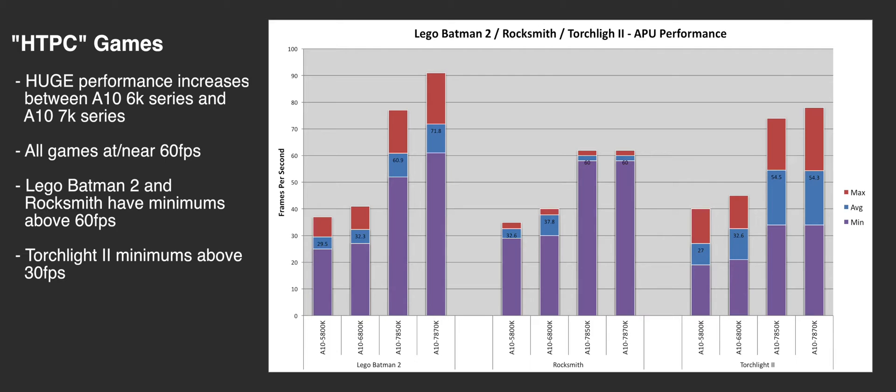The first set is Lego Batman 2, Rocksmith, and Torchlight 2. You can see we're multi-generational here going back to the 5800K. There are some big solid increases between the 6800K and the 7000 series. Pretty much everything is at or above 60 frames per second, and with the 7870K on Lego Batman 2 and Rocksmith, minimums are above 60 fps as well. Minimums on Torchlight are above 30 fps — all three are great contenders for use on the APU.